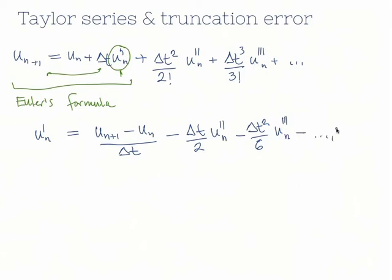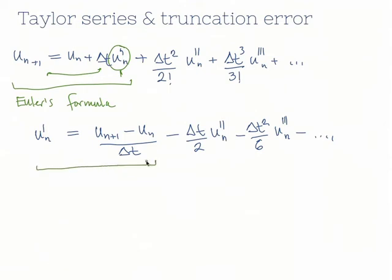In the Euler approximation we only keep the finite difference term. This is our Euler method approximation of the first-order derivative, and all of the remaining higher-order terms are neglected. These neglected terms in Euler's method are called the truncation error.